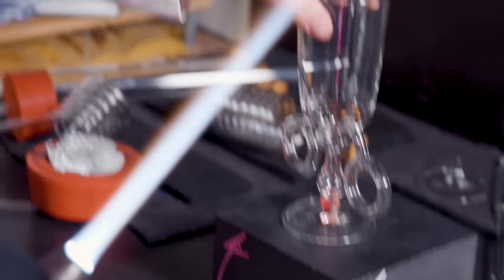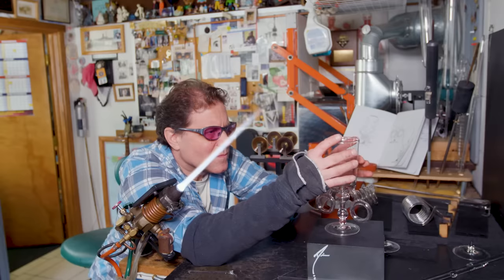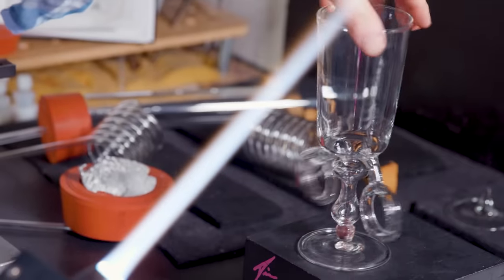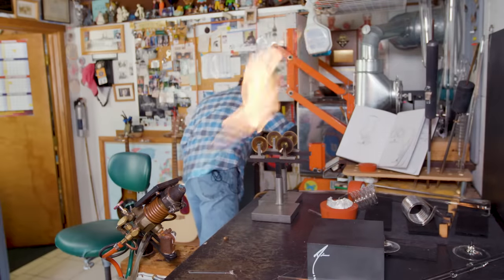After I've worked it, there'll be really thin spots on a cup and then a real thick spot down by the stem. Because the glass is cooling at different rates when it's thick and thin. I need to go in the oven with it now.